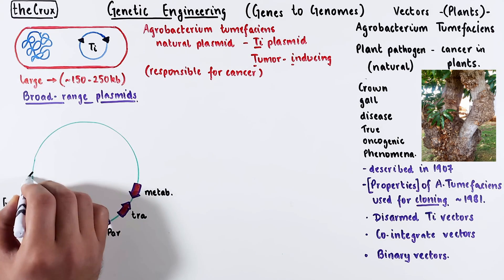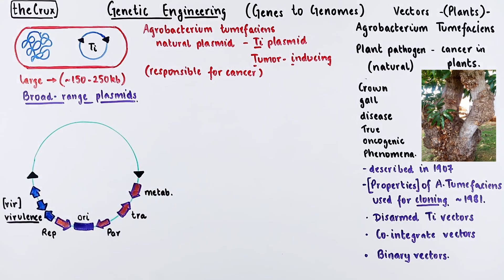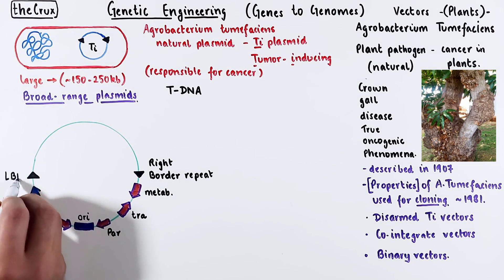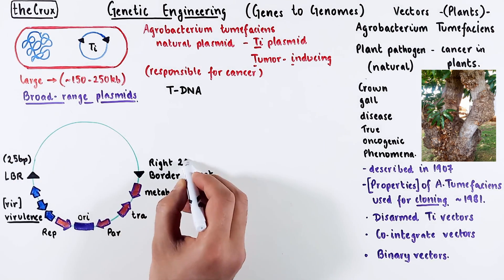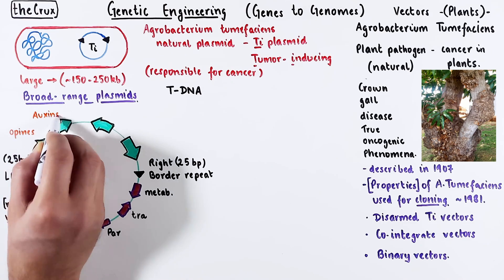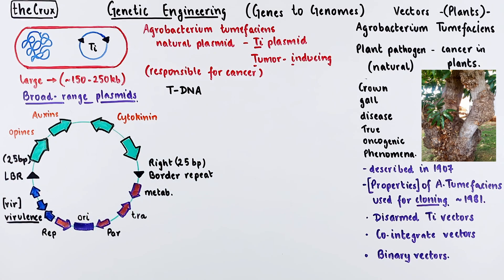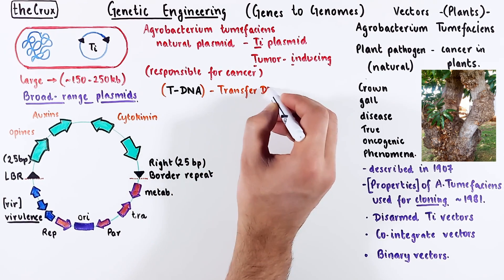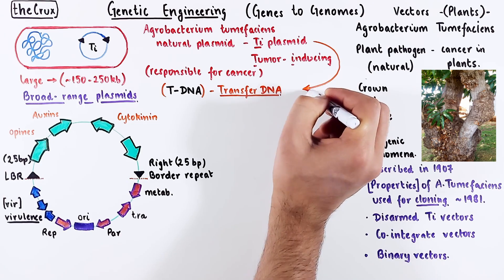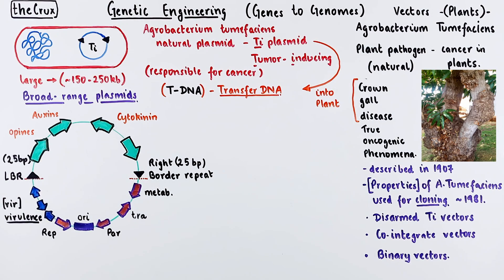The important part is the other side of the plasmid called T-DNA. The T-DNA has a right-border repeat and a left-border repeat. Even though both repeats are 25 bases long, they are not identical. The DNA in between the repeats has a bunch of genes that encode for products like opines, auxins, and cytokinins. From the entire Ti plasmid, only this T-DNA portion is transferred to the plant that results in cancer.